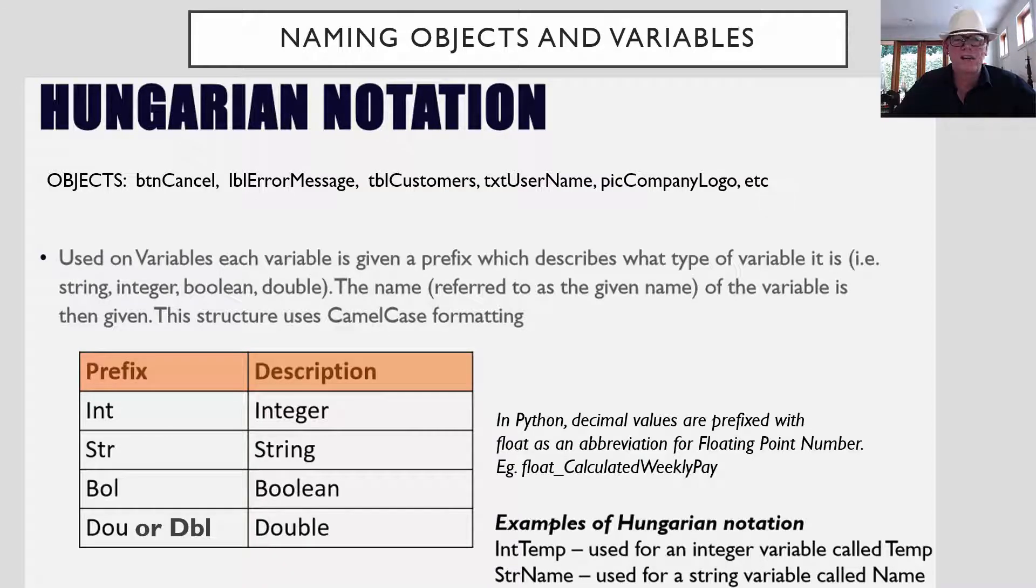So there is Hungarian notation where you indicate as part of the name of an object or a variable what kind of thing it is. So if you've done visual basic program, when we have buttons, we put BTN cancel in front. So we don't just write cancel, we write BTN when we're in the program so that we know this is referring to the button. If we've got an error message popping up on the screen, we've formatted that by creating a label. So we put LBL in front of its name. And these are Hungarian notation things which you have to do.